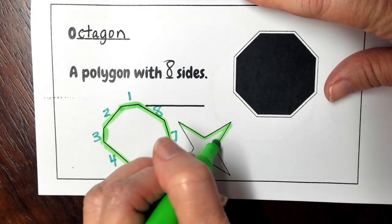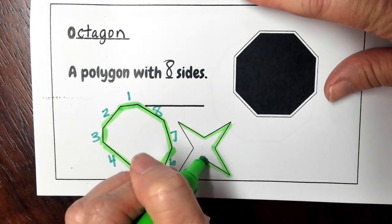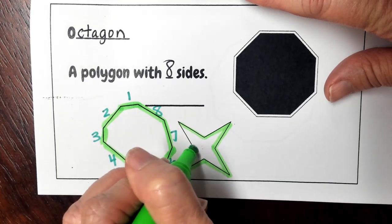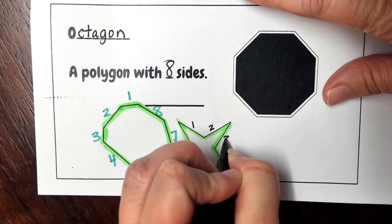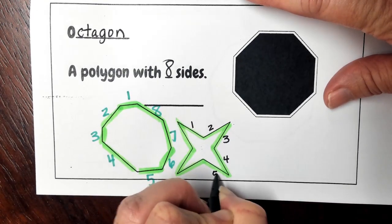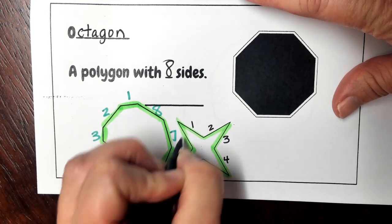1, 2, 3, 4, 5, 6, 7, and 8. So I'm going to label those 1, 2, 3, 4, 5, 6, 7, 8.